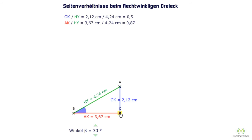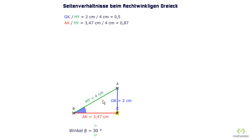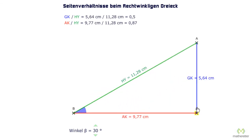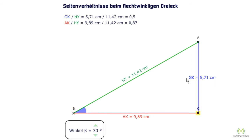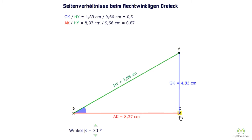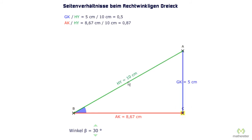If we reduce further — for example, an opposite side of 2 — we see 2 divided by 4 is 0.5. That is, no matter what size triangle we have at an angle of 30 degrees, if we divide the opposite by the hypotenuse, we always get 0.5. In other words, the opposite is always 0.5 times as long as the hypotenuse — so half as long at an angle of 30 degrees. For example, with 11.42 cm for the hypotenuse, the length of the opposite must be 0.5 times the hypotenuse: that means 5.71 cm. Or the other way around: if the opposite is 5 cm, then the hypotenuse has to be twice as long.